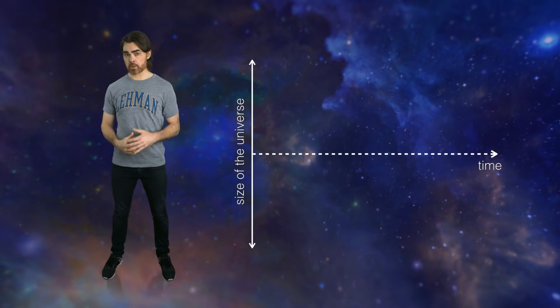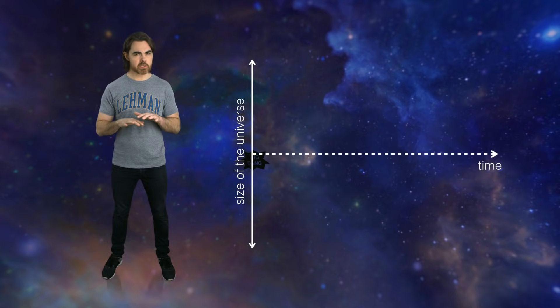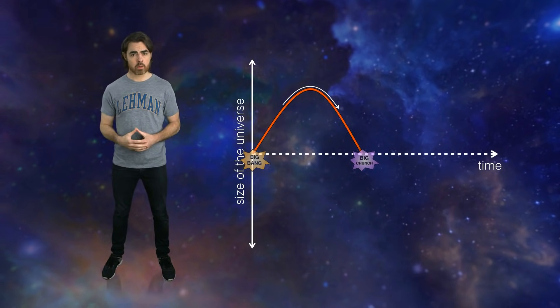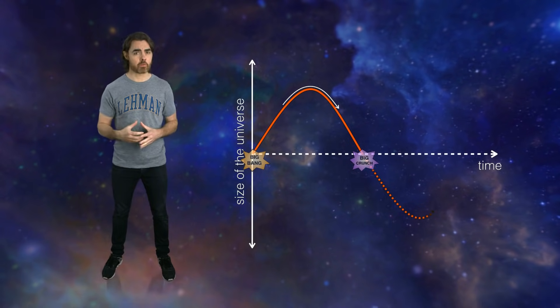But then that deceleration turned around as dark energy kicked in, resulting in the current accelerating expansion. With a negative cosmological constant and this sinusoidal expansion, any slowdown happens near the turnaround point, presumably tens of billions of years in the future. And that's hard to fit to the supernova data.